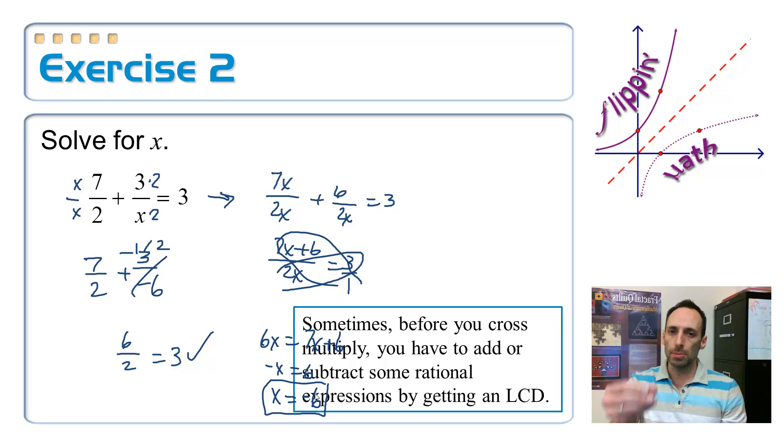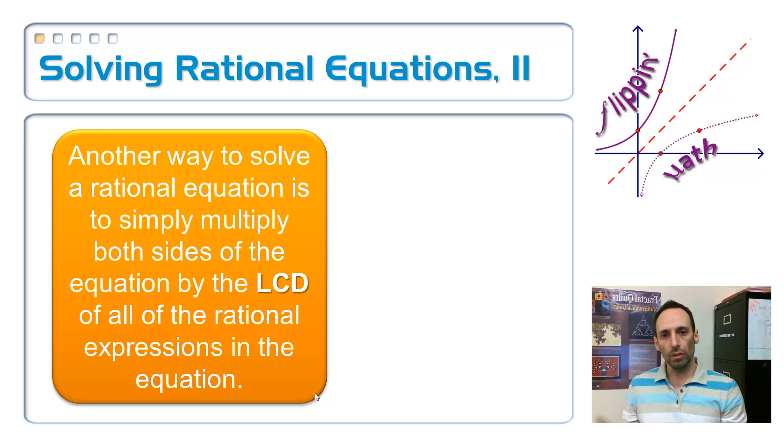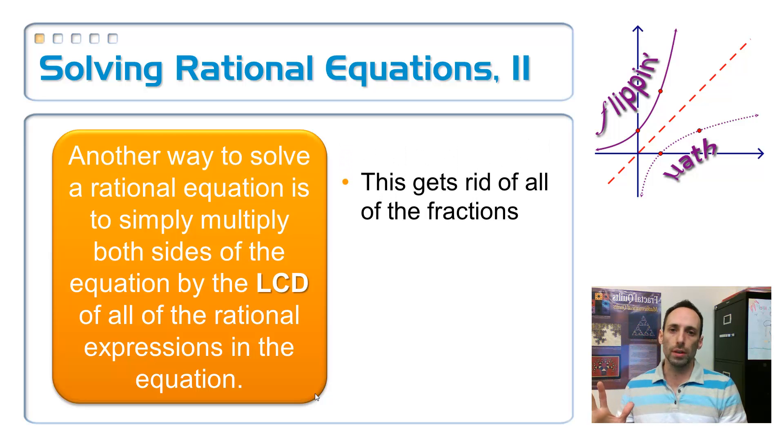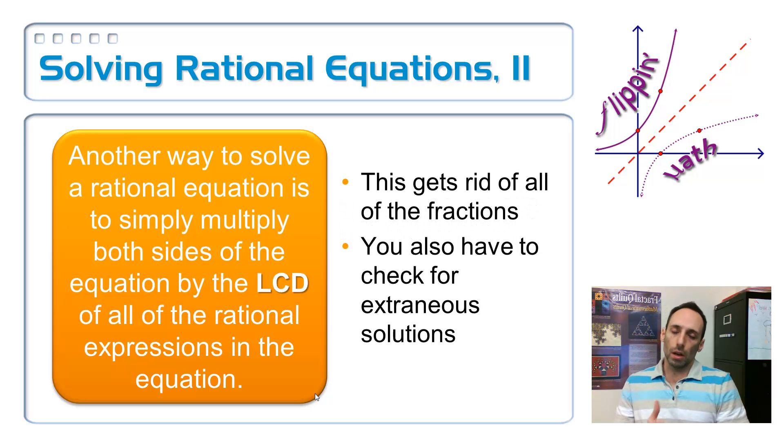So that's one thing we sometimes have to do. Add something up, maybe subtract something up before we can do our cross-multiplying. But here's a different way to do that. Another way to solve rational equations is just to multiply everything, both sides of the equation, by the least common denominator of all of the fractions, of every single fraction that's in the equation. What that's going to do is magically get rid of all your fractions. They're all going to totally disappear, and then you have no fractions in your equation anymore. And then, of course, you want to check to make sure that you haven't created any extraneous solutions, anything that might make the denominator equal to 0.